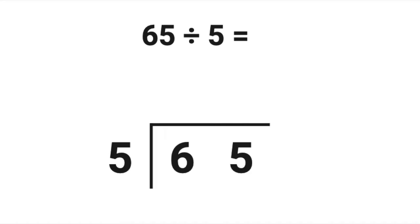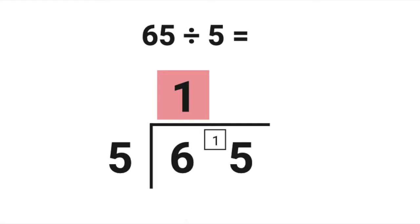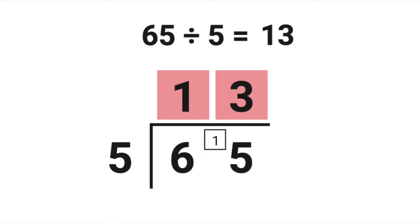Try one yourself. 65 divided by 5. Think about how many 5's there are in 6. How many are left over? How many 5's are there in 15? That means 65 divided by 5 equals 13.